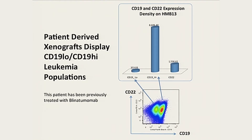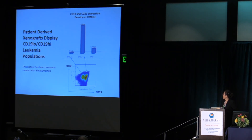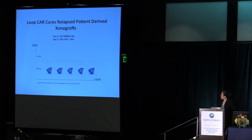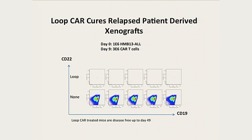We also had a patient-derived xenograft line from a patient previously treated with blinatumomab, who relapsed with two populations of CD19: one CD19-low and one CD19-high. This PDX line also expressed normal CD22. When we tested with the loop CAR in vivo, the mice treated with loop CAR remained disease-free up to day 49, while the non-treated group all died around day 35.